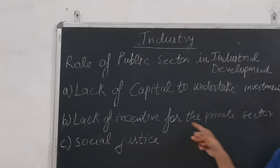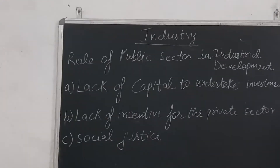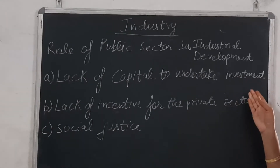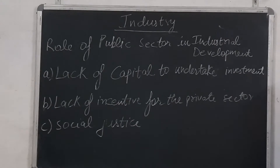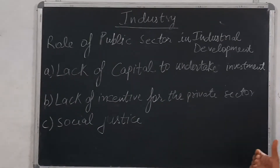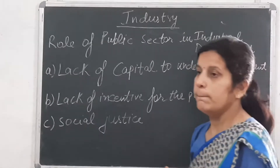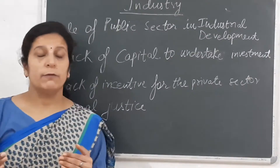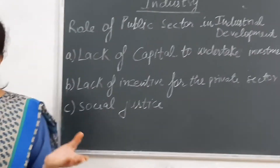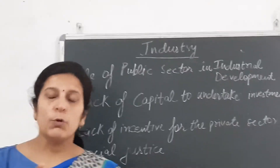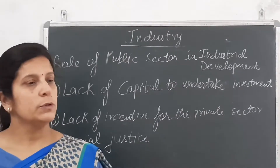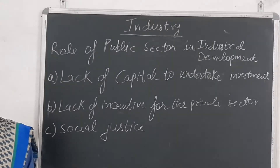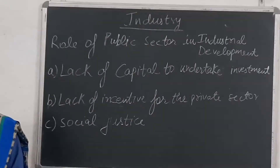The second reason is lack of incentive for the private sector. The private sector works only for the profit motive, and the goods produced by industries require a market. But at the time of independence, as partition had also occurred, India was suffering from a food crisis and there was a very small market where goods could be sold. So the private sector had little incentive to develop industries, as it was not very profitable at that time.